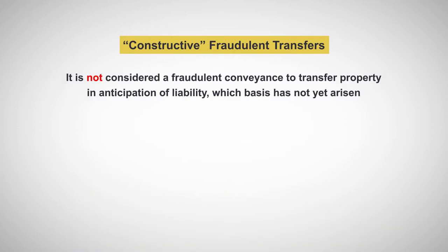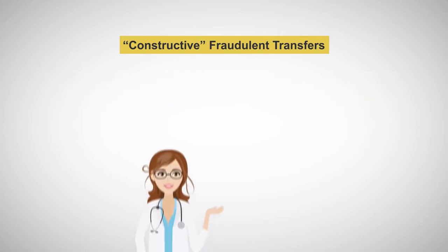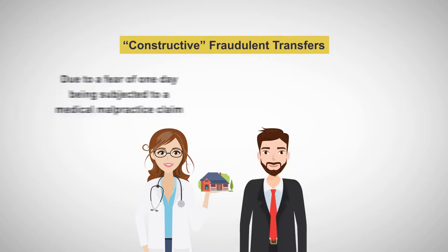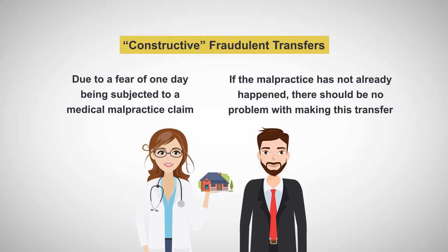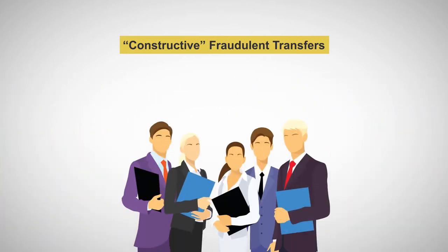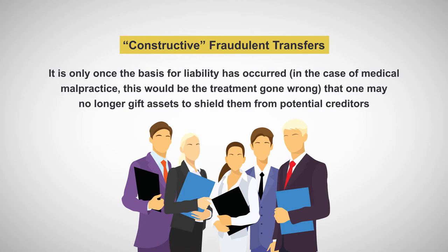It is important to note that it is not considered a fraudulent conveyance to transfer property in anticipation of liability whose basis has not yet arisen. A doctor can, for example, convey her house to her husband due to a fear that one day she may be subjected to a medical malpractice claim. If the malpractice has not already happened, there should be no problem with making this transfer. In fact, this sort of maneuver is quite a common tool among professionals who are at high risk of malpractice lawsuits. It is only once the basis for the liability has occurred — or in the case of medical malpractice, the treatment gone wrong — that one may no longer gift assets to shield them from potential creditors.